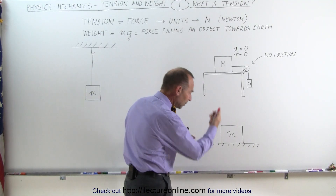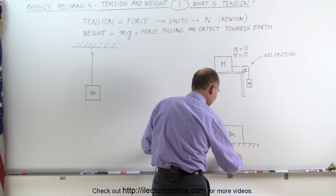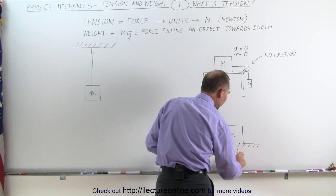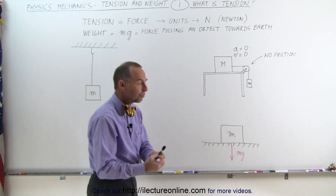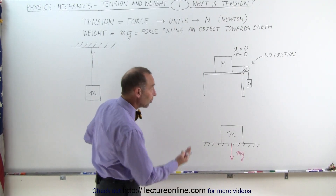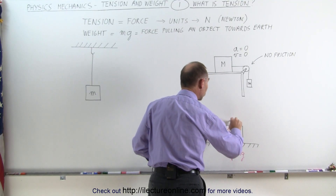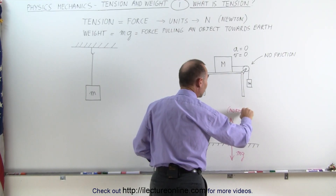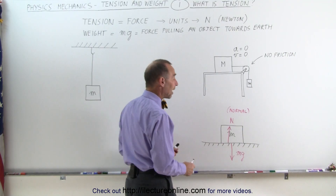An object simply has mass but would not have weight. In this case, we can see that the weight is the force pulling down on the object, and we can draw a vector representing that force. The force is equal to the weight, or the product of mass times gravity, pulling the object towards the earth. According to Newton's third law, there's a reactionary force pushing back on the object from the earth — that would be called the normal force, which is perpendicular to the surface.